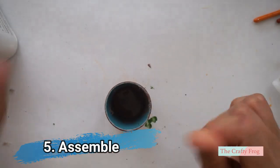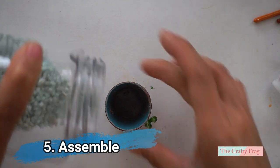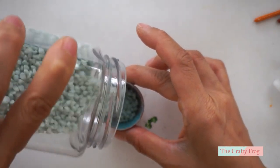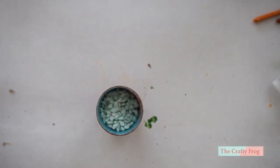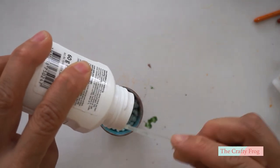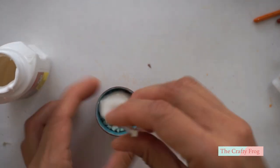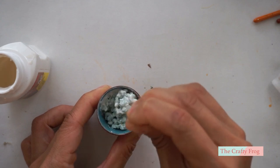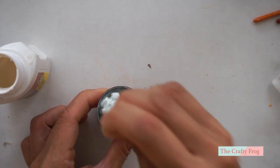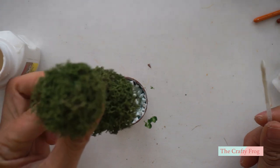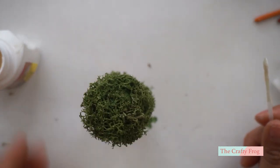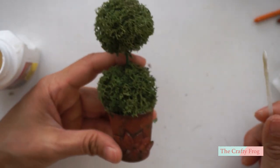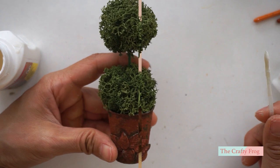And lastly assemble the pot and the topiary tree together. Here I am using some pebbles from a previous project. You can also use small stones or dirt that you can gather from your backyard or a styrofoam or a crumpled paper. So you have many options here. And then I just added glue and stick the topiary tree in the pot.